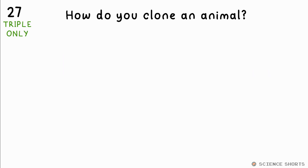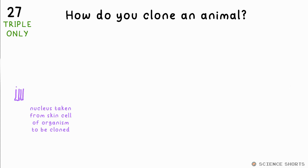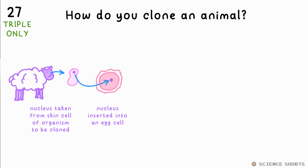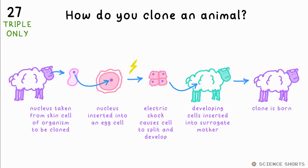How do you clone an animal? You take the nucleus from a cell from the animal you want to clone and insert it into the egg cell of another of the same species. You then insert the artificially fertilized egg into a surrogate mother, and the clone will develop.